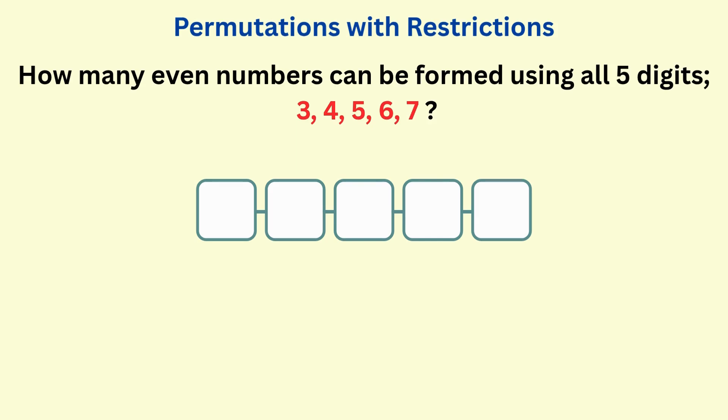So the last digit must be either 4 or 6, so we have two choices for the last box. Now, once one digit from the 5 is used, four digits now remain. So for the first box, we have four choices.